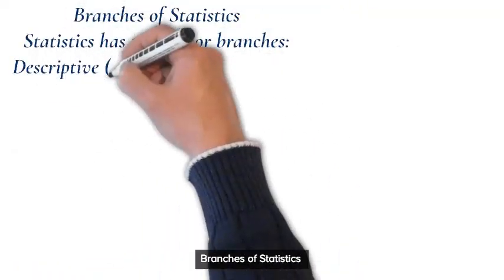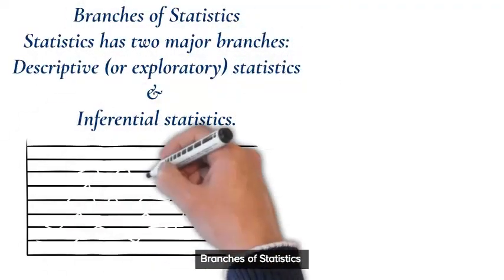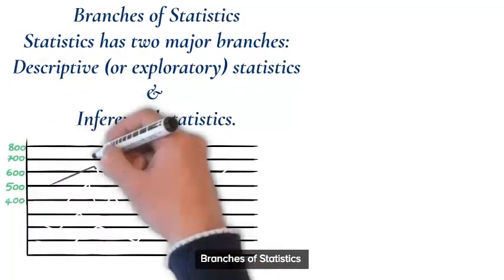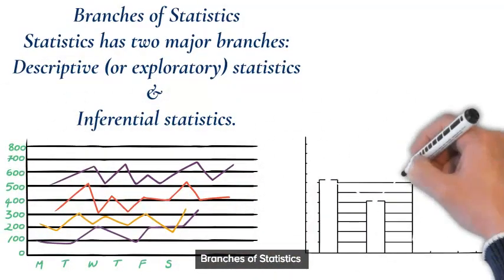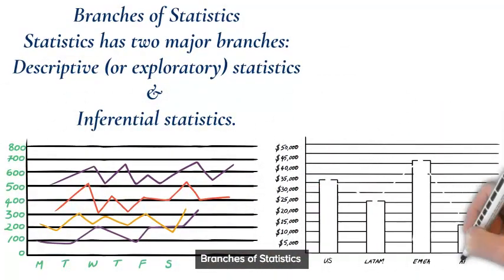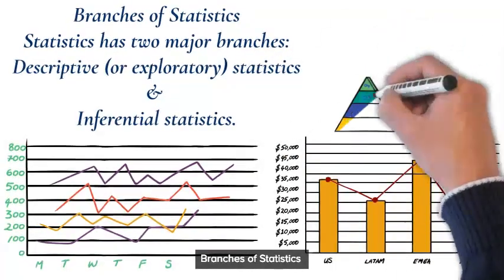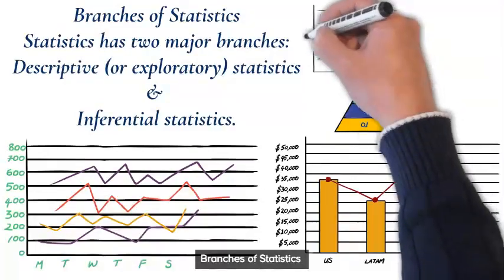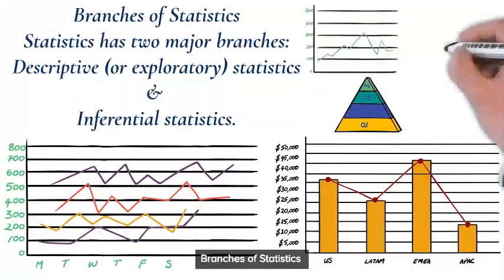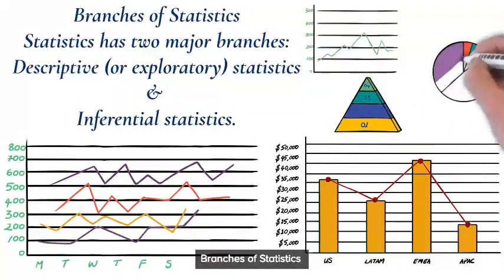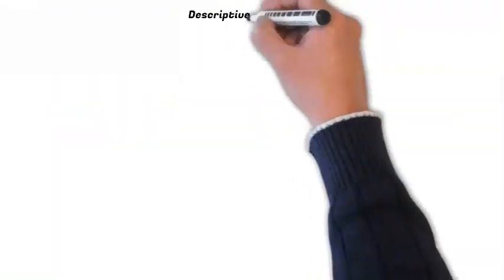There are two major branches of statistics. The first branch is called descriptive or exploratory statistics, and the second one is known as inferential statistics. We will learn what is descriptive statistics and inferential statistics.